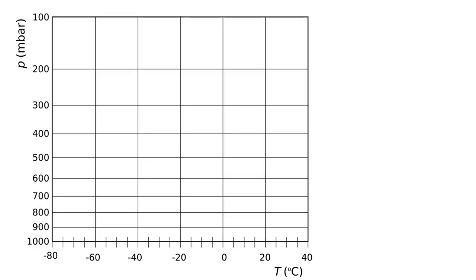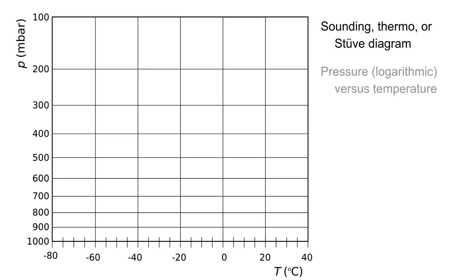The data is set out in a graph like this one. This is the actual sounding diagram, also called a thermodiagram or a stuverdiagram. Vertically you'll see the pressure in millibars and horizontally the temperature in degrees Celsius. The pressure is set out logarithmically, which means that the difference between 100 and 200 millibars at the top is larger than between 900 and 1000 millibars at the bottom. By setting it out logarithmically, the height is more or less linear in this diagram.